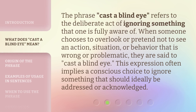The phrase 'cast a blind eye' refers to the deliberate act of ignoring something that one is fully aware of. When someone chooses to overlook or pretend not to see an action, situation, or behavior that is wrong or problematic, they are said to cast a blind eye. This expression often implies a conscious choice to ignore something that should ideally be addressed or acknowledged.